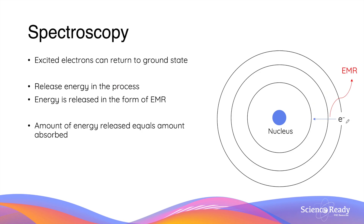When these excited electrons return to the ground state — that is their original orbit — they will emit the same amount of energy that was previously absorbed, in the form of electromagnetic radiation. And since the amount of energy absorbed varies between different elements, the amount being released by these elements is also different.